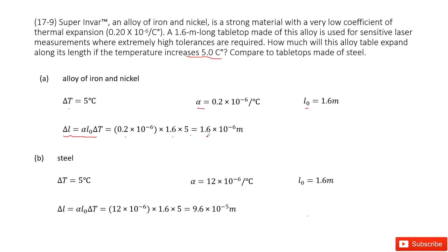The second part, we just change the material from the alloy to steel. You can see the temperature change delta T doesn't change, L0 doesn't change. The only thing that changes is alpha.